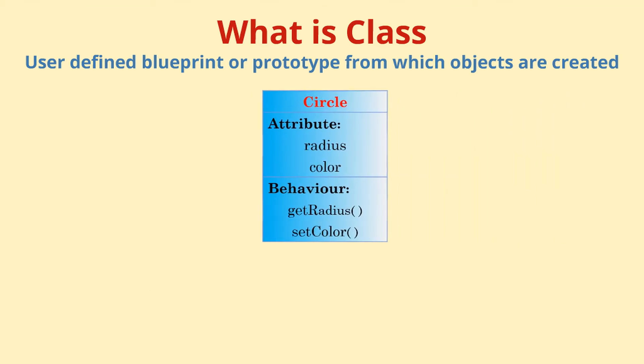For example, we have a class circle from which we can create objects like wheel, watch, sun, etc. They are user-defined data types and in itself do not consume any space.